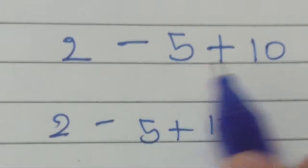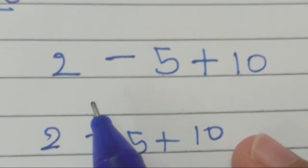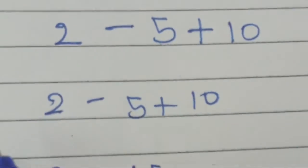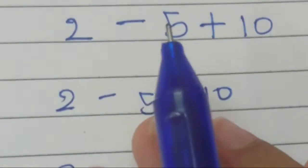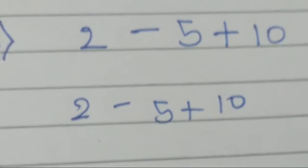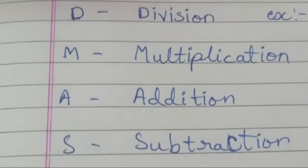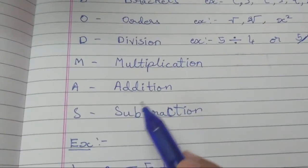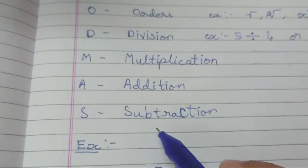Some say that you should do 2 minus 5 first, then 5 plus 10. But that is not the answer. First you should use the BODMAS rule. In BODMAS rule, as you can see, first addition comes, then subtraction.